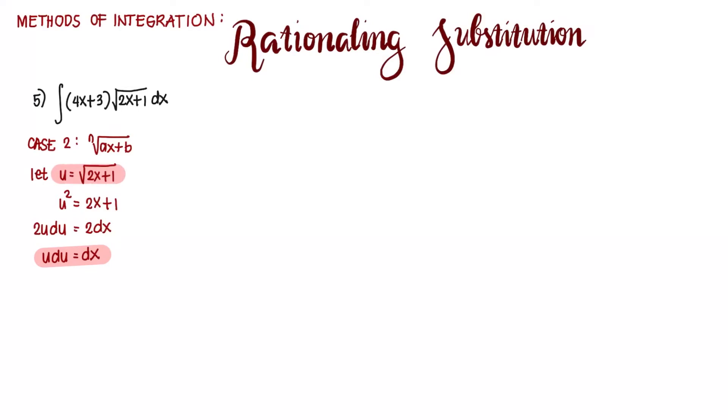For 4x + 3, we have 4x + 3 here. Since we have 2x + 1, if we transpose 1 to the left side...